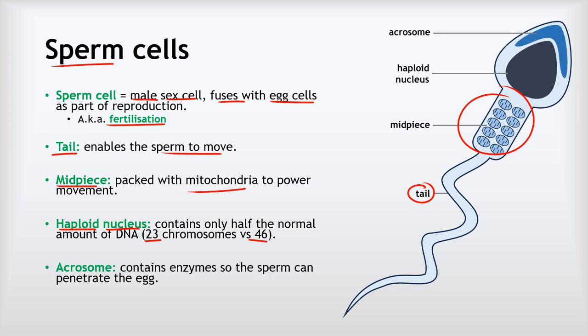Lastly, we've got the part at the very tip of the sperm cell called the acrosome. The acrosome is packed with enzymes that help the sperm to penetrate into the egg cell during fertilisation.